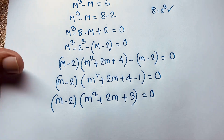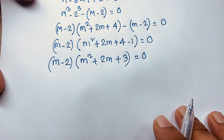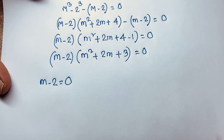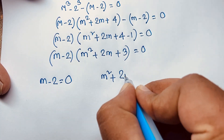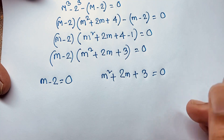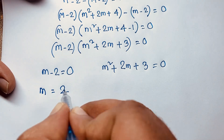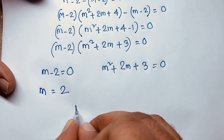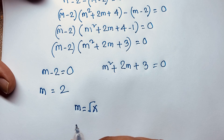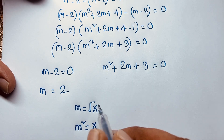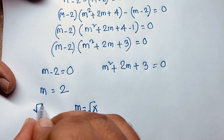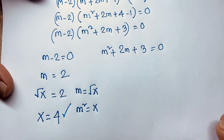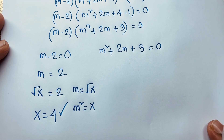So the factored form is (m minus 2)(m² plus 2m plus 3) equals 0, since 4 minus 1 is 3. This gives two cases. Case 1: m minus 2 equals 0, so m equals 2. Recalling that m equals √x and m² equals x, we get √x equals 2, so squaring both sides gives x equals 4. This is our real solution.